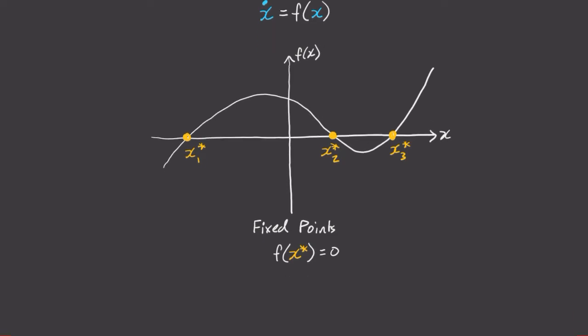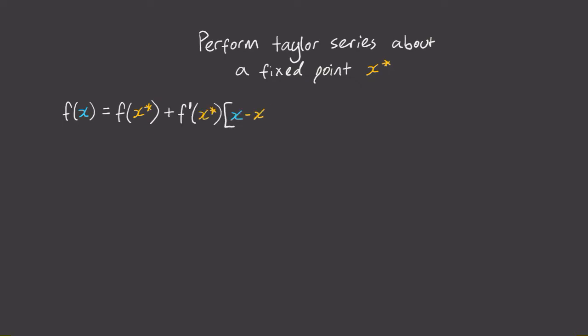Let's analyze each one of these fixed points in more detail. We'll start by performing a Taylor series expansion about any fixed point x star. A Taylor series is just a way of expressing your function as an infinite polynomial involving derivatives evaluated at your fixed point.